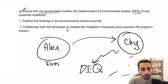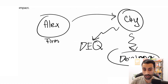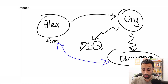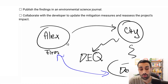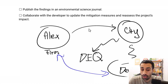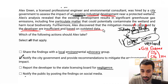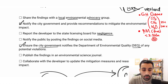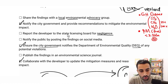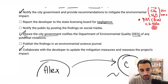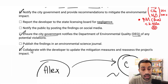Option G: Collaborate with the developer to update the mitigation measures and reassess the project's impact. If invited — say the city tells us the developer agreed to fix the issues — then yes, we should collaborate. We tell the developer what the issues are with the current mitigation measures, why the data is outdated, what's insufficient, and so on. So the correct answers are: B (notify the city), E (ensure the DEQ is notified, especially given public health risk), and G (collaborate with the developer to update mitigation measures if invited).